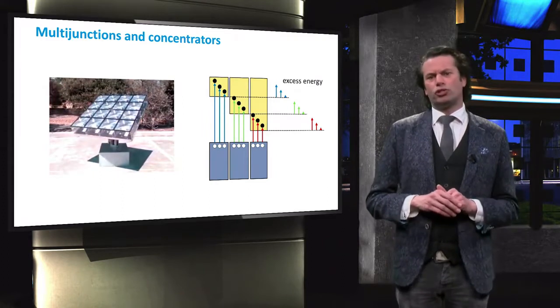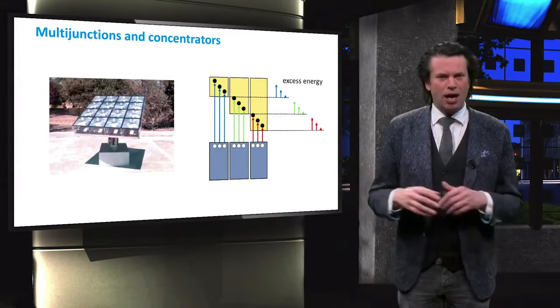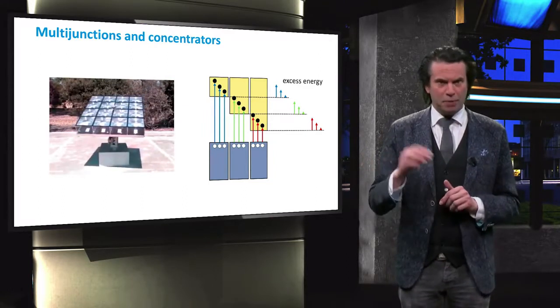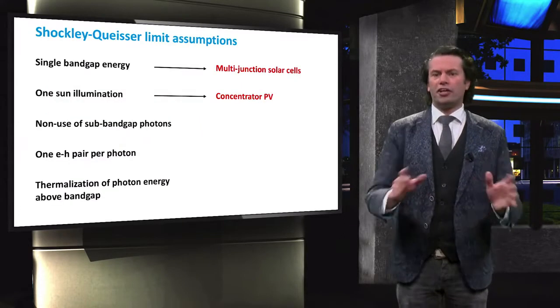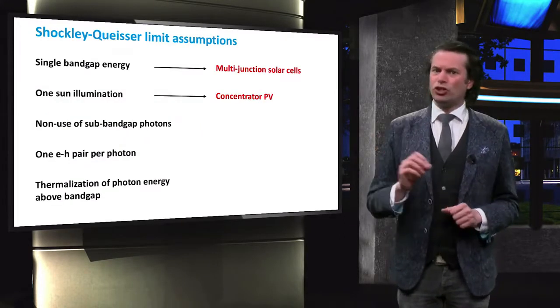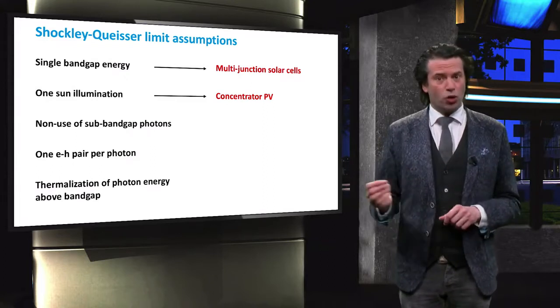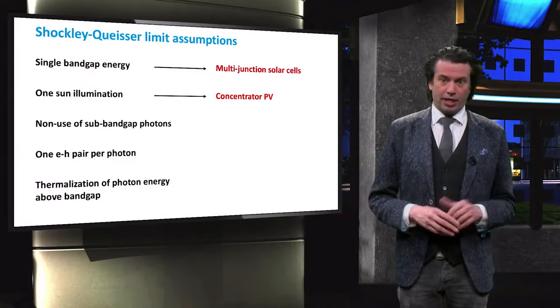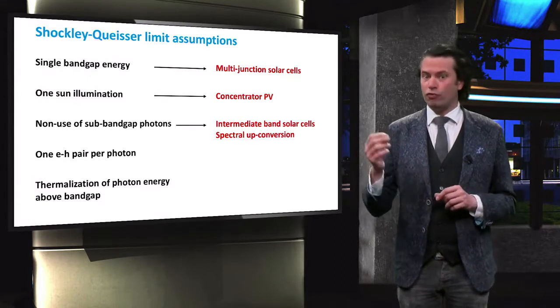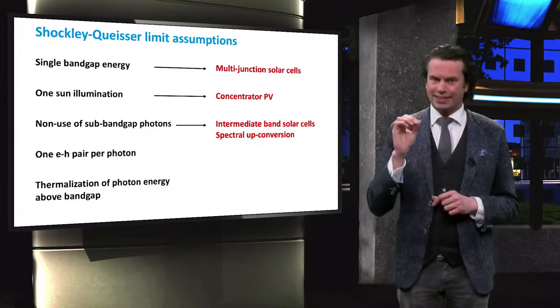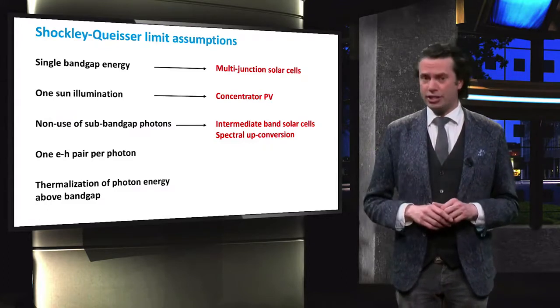Multijunction solar cells, and the different materials and device structures used to make them, are extensively discussed in the PV technology course. The third assumption is that the single junction solar cell is transparent to photons with an energy below the bandgap energy. Intermediate band solar cells and spectral up-conversion are two concepts that tackle this assumption. Let's look into these concepts.